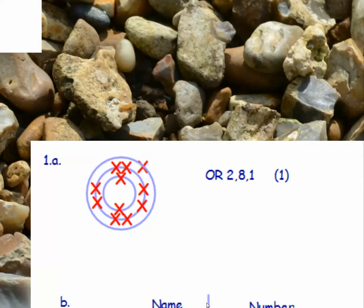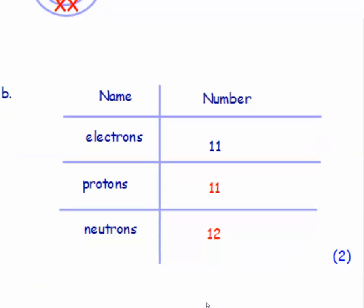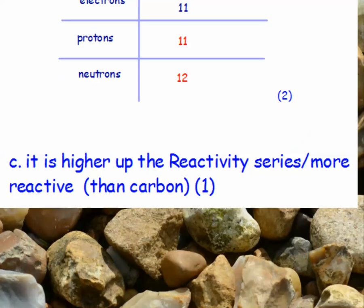For electronic structure, you should have drawn two electrons in the first shell, eight in the second, and one in the outermost shell. For the subatomic particles, you should have given 11 protons and 12 neutrons. Sodium can't be extracted from its ore by reduction with carbon because it's higher up the reactivity series — more reactive than carbon.